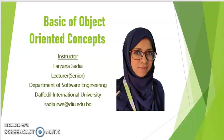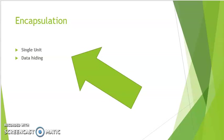Welcome to my course. In this session, we will learn about the basic object-oriented concept that is encapsulation — what encapsulation means, how we can achieve it. To achieve encapsulation in Java and other object-oriented programming languages, you have to implement two things: one is single unit, and the other is data hiding.